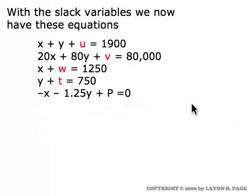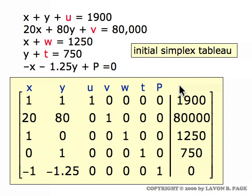Since we have five equations, we'll have five rows in our initial simplex tableau. We'll have a column for X, Y, U, V, W, T, and P coefficients, plus the numbers on the right — eight columns in total. The columns are: X and Y for the original variables, U, V, W, and T for all the slack variables, a column for the profit P, and the numbers on the right.